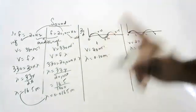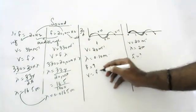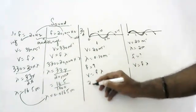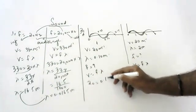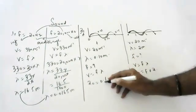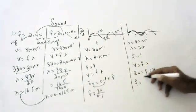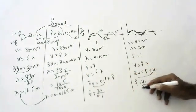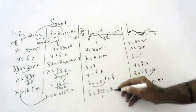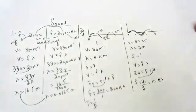Now to find frequency, we use v = f × λ. For the first graph: 20 = f × 0.1, so f = 20 ÷ 0.1 = 200 hertz. For the second graph: 20 = f × 2, so f = 20 ÷ 2 = 10 hertz.